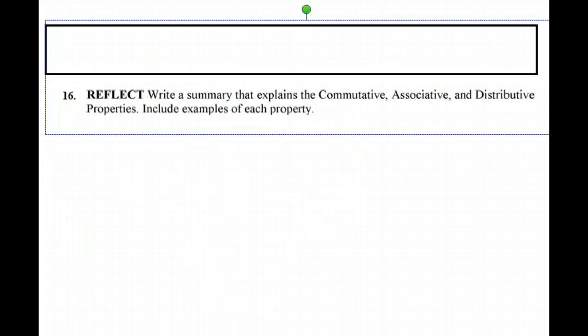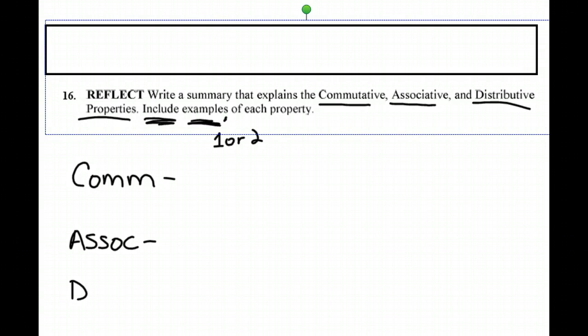So now we have 16, and it says reflect. Write a summary that explains the commutative, associative, and distributive properties. Include examples of each property. Examples meaning plural, so maybe one or two. Now, we've done a lot of talking about these properties in class this week, so this should not be too hard. What I'd like to see is you defining each of these properties and giving me at least one or two examples of each.